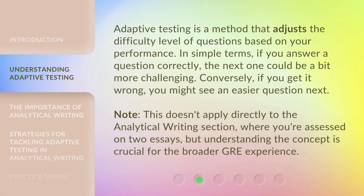Adaptive Testing is a method that adjusts the difficulty level of questions based on your performance. In simple terms, if you answer a question correctly, the next one could be a bit more challenging. Conversely, if you get it wrong, you might see an easier question next. Note, this doesn't apply directly to the Analytical Writing section, where you're assessed on two essays, but understanding the concept is crucial for the broader GRE experience.